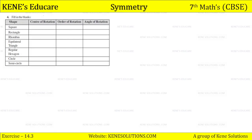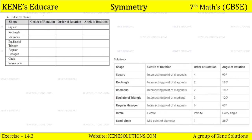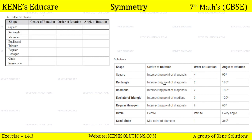So students, filling in the blanks: for a square, the center of rotation is the intersecting point of the diagonals, the order of rotation is 4, and the angle of rotation is 90 degrees. For a rectangle, the center of rotation is the intersecting point of the diagonals, the order is 2, and the angle of rotation is 180 degrees.